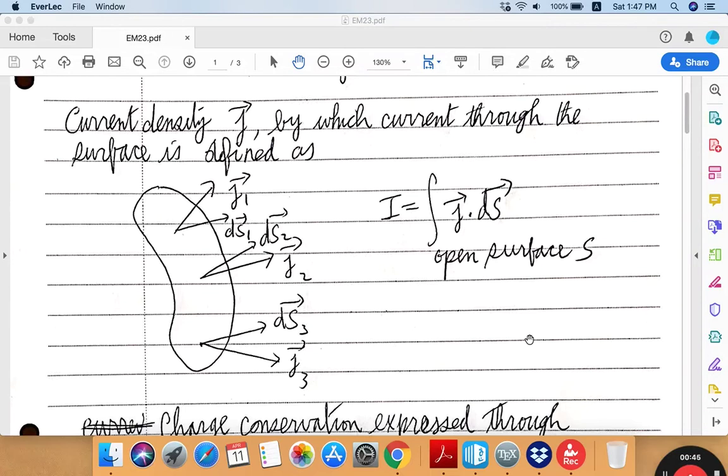Current density is an example of a vector field defined at every point in space and time. And what we normally call the current is defined in relation to the current density. So given any open surface like this, there's a normal surface vector at every point on the surface. Let me call that ds. And also at the same point, one can define the current density vector. And then you take the inner product of the two vectors,